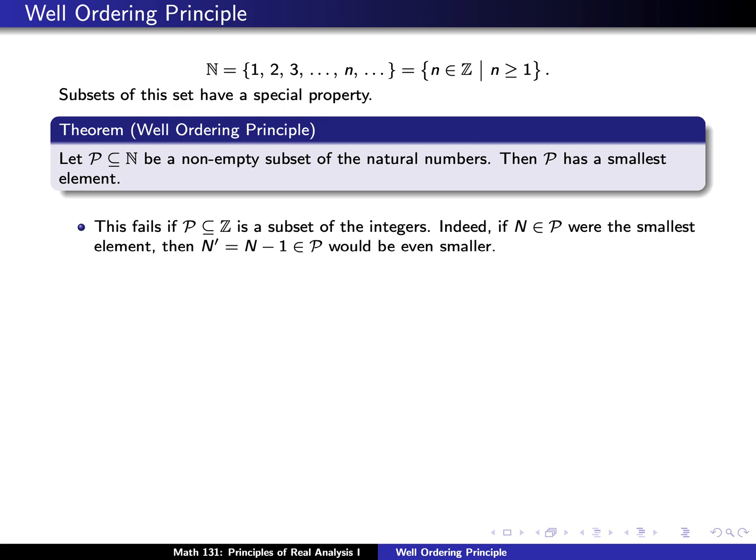Unfortunately, this property of well-ordering fails if you consider subsets of the integers rather than just subsets of the natural numbers. For example, if we let p be the collection of all integers itself, there is no least element. If there were a least element — let's call this n — I can always take n and subtract 1 from it, giving an integer that's even smaller. So the integers have no smallest element.